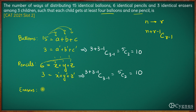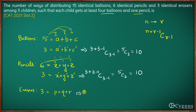And finally we have erasers. We have a total of 3 identical erasers which have to be distributed amongst 3 children. Let us say each child gets P, Q and R number of erasers. Now there is no restriction on erasers, so the number of ways will simply be N plus R minus 1 C R minus 1, which is 3 plus 3 minus 1 C 3 minus 1. This also is 5 C 2, which comes out to be 10.